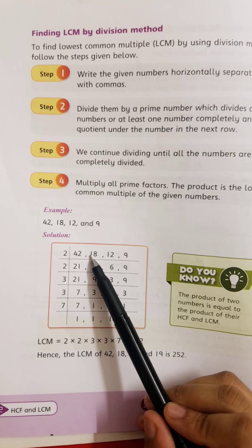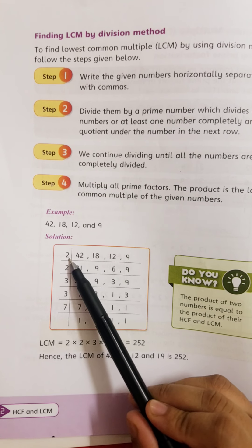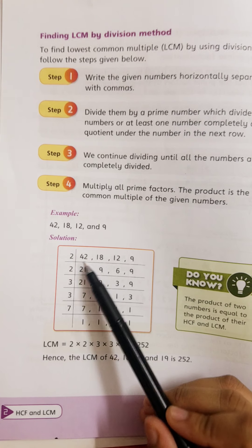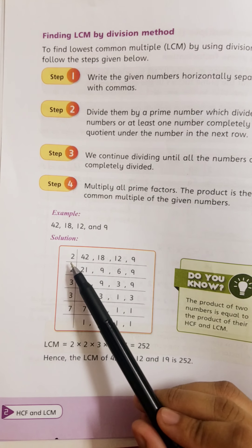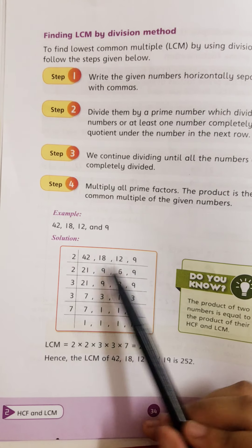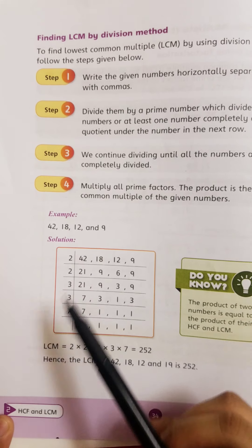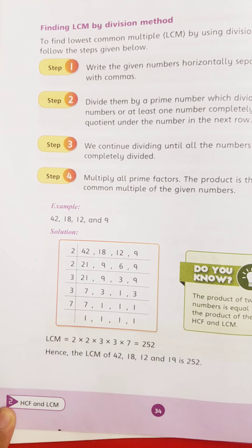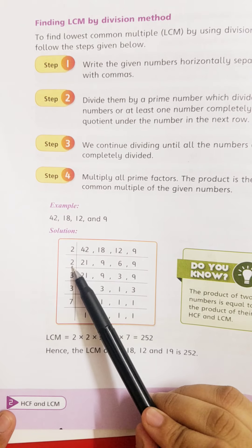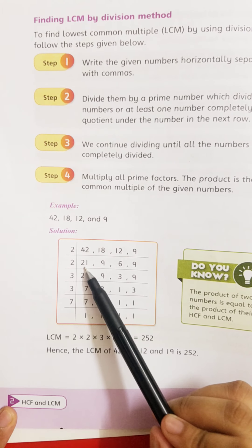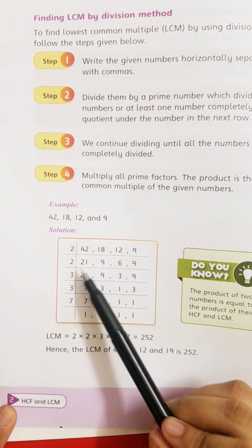2 twenty-ones are 42, 2 nines are 18, 2 sixes are 12, and 9 is odd so write 9 as it is. Then again 21 and 9 are odd numbers, 6 is even, so again divide by 2.